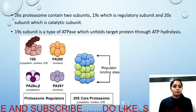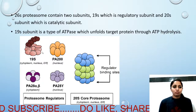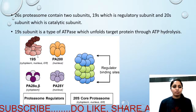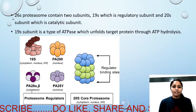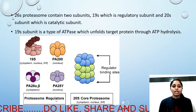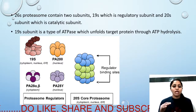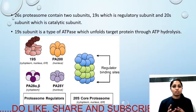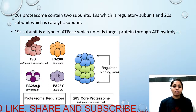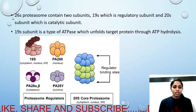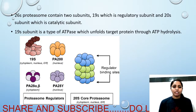This is the proteasome structure. There are two units present: one is the 19S subunit and the other is the 20S subunit. The 19S subunit is the regulatory unit. The 20S subunit is the core proteasome, also called the catalytic subunit, because the proteolytic reaction is catalyzed here. The 19S subunit regulates the overall process.